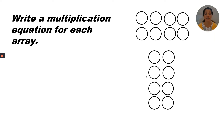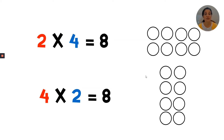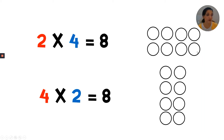Write a multiplication equation for each array. Remember, the number of rows is the number that goes in the first factor place. The number of columns is the number that goes in the place of the second factor. So you should have written two times four equals eight. You can count by four twice: four, eight, or you can count all of the circles one through eight. Two times four equals eight. Now for the second equation, we've got four rows of two equals eight. So I can count by two four times: two, four, six, eight. Four times two also equals eight.